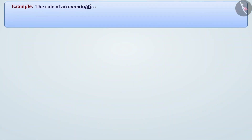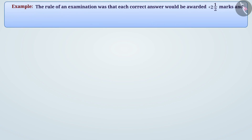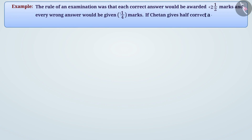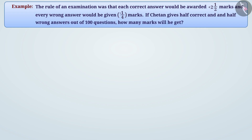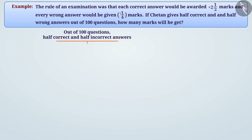The rule of an examination was that each correct answer would be awarded plus two and a half marks and every wrong answer would be given minus 1/4 marks. If Chetan gives half correct and half wrong answers out of 100 questions, how many marks will he get? Chetan gave 50 correct and 50 wrong answers. A correct answer gives 5/2 marks.